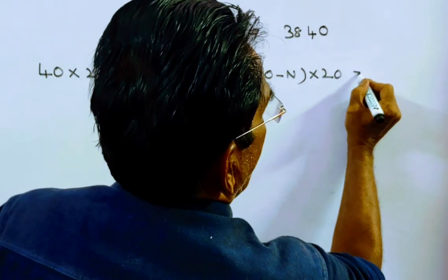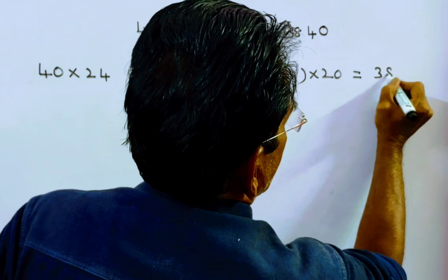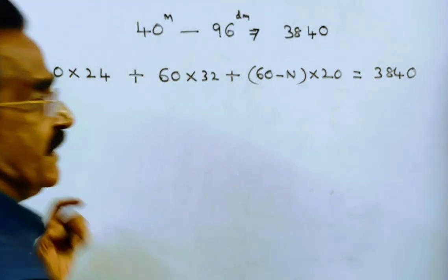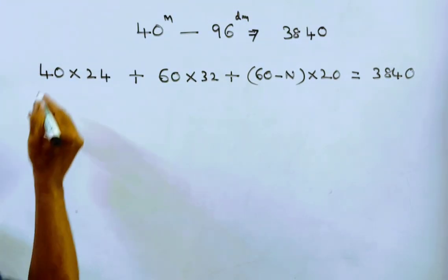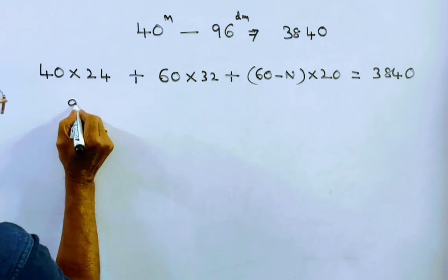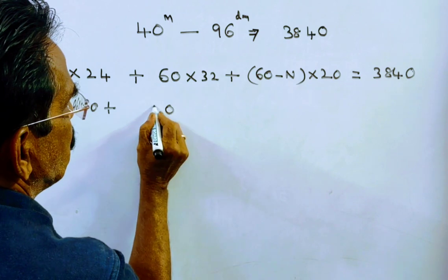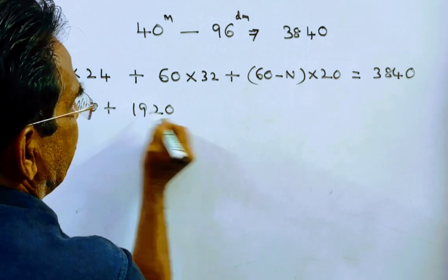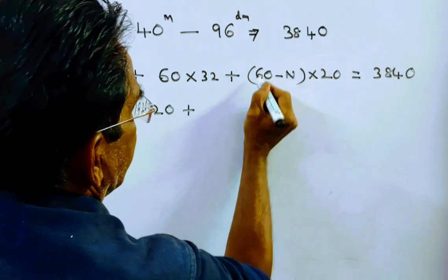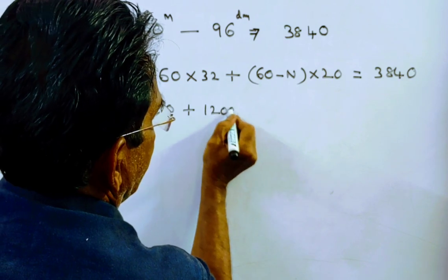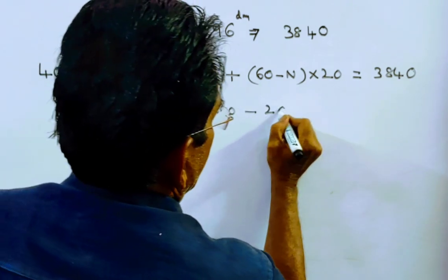So they completed 3840 days work. 40 into 24, 960 plus 60 into 32, that's 1920, plus 20 into 60, 1200 minus 20n.